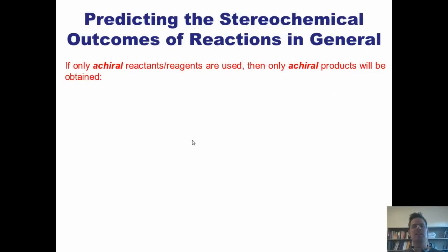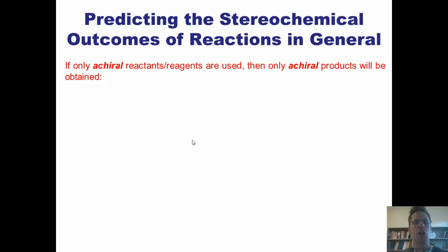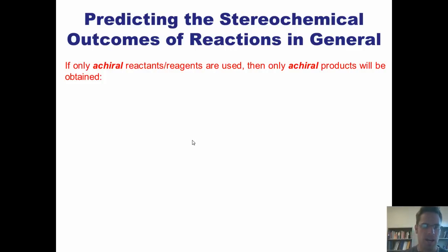We now move on to a different subject: predicting the stereochemical outcomes of reactions in general. This is the principle I want you to remember. If I run any reaction and all of my reactants and reagents are achiral, then I will, in general, always get achiral products out the other side.